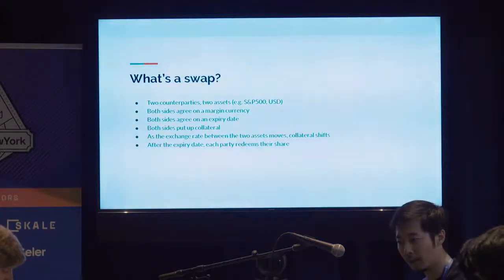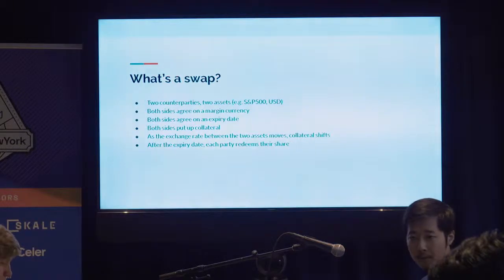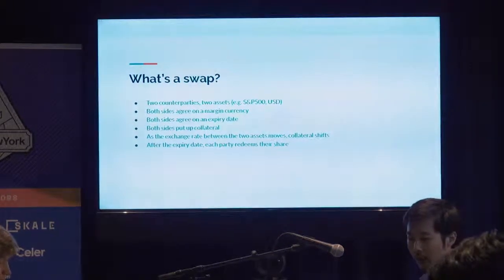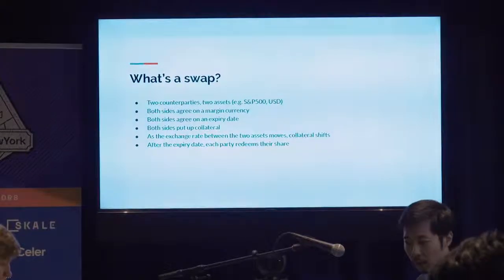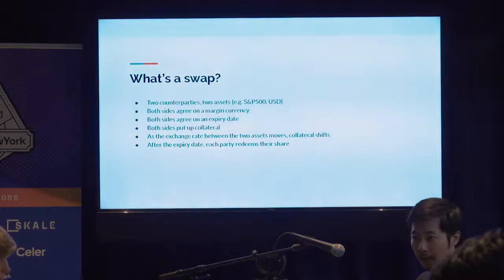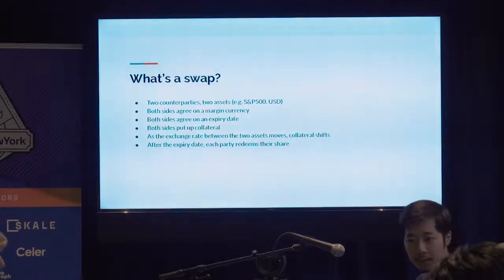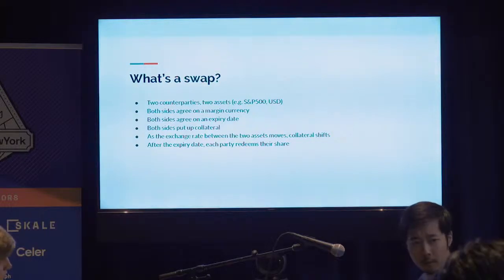There are special cases where there are no expiry dates. The well-known one is BitMEX — not built on Ethereum, it's on a centralized exchange in Hong Kong — but they have perpetual swaps. You enter into an agreement, for example Bitcoin to U.S. dollars, with no expiry date. Underneath the hood there are expiries, but it just rolls over and you're not exposed to it. You can hold a long Bitcoin position against short U.S. dollars and exit whenever you want.